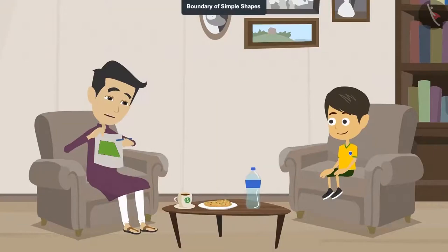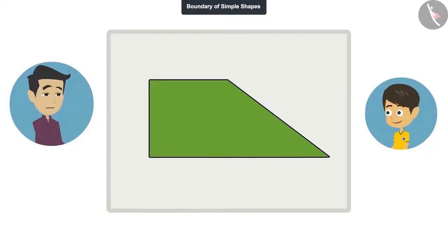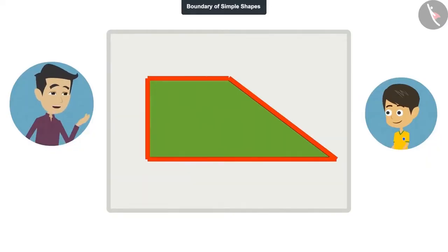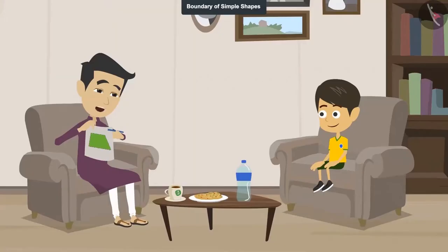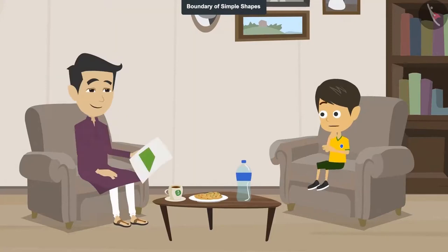See, this is our farm. This is the line around the field. It shows us where the edge of the field is. So, this line is the boundary of this field. Now, did you understand? Yes, now I understand. The edge of a shape is called its boundary.